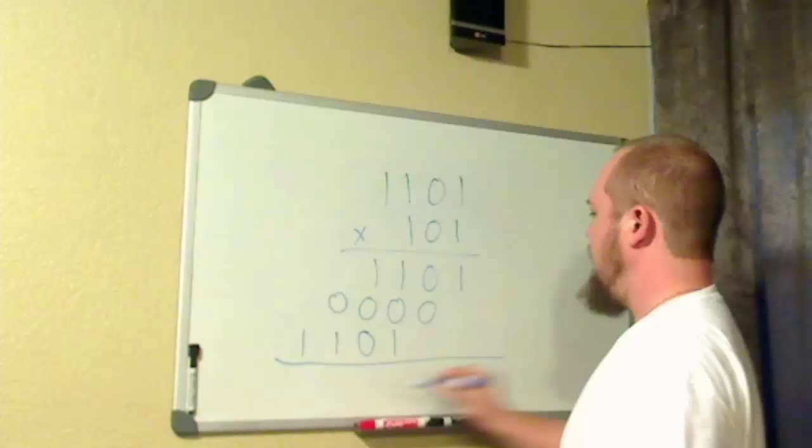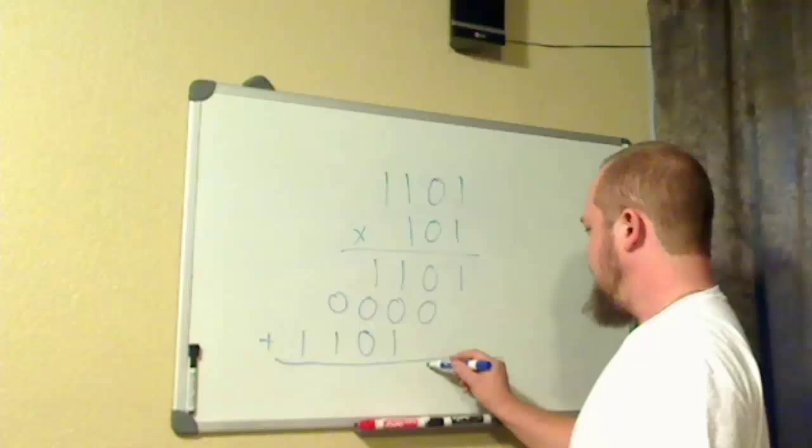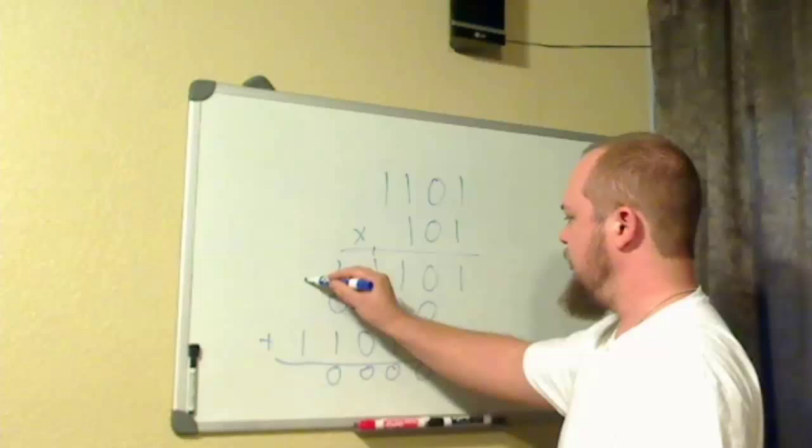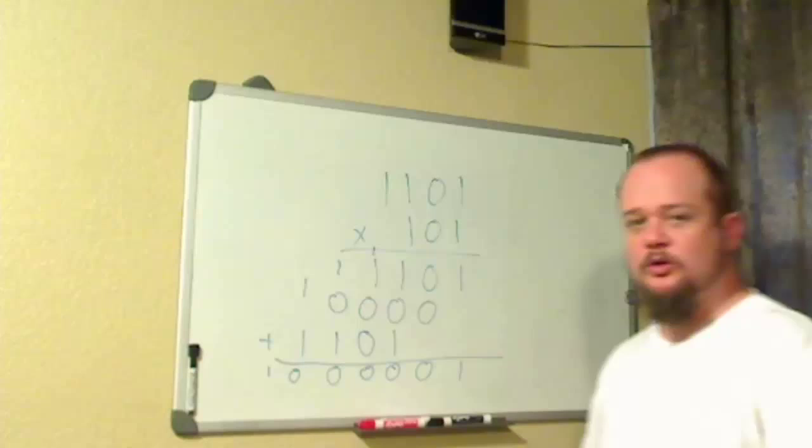1 plus nothing, 1, 0. 1 plus 1 is a 0, carry the 1. 1 plus 1 is a 0, carry the 1. 1 plus 1, 0, carry the 1. And a 0, 1. And that is all you have to do to multiply in binary.